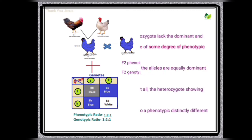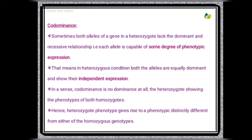Now let's look at the second phenomenon — codominance. This is also an exception to Mendel's law of dominance. Sometimes both alleles of a gene in a heterozygote lack a dominant-recessive relationship, meaning each allele is capable of some degree of phenotypic expression. In the heterozygous condition, both alleles are equally dominant and show their independent expression. In a sense, codominance is no dominance at all — the heterozygote shows the phenotypes of both homozygotes.